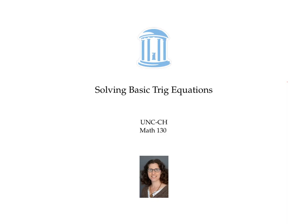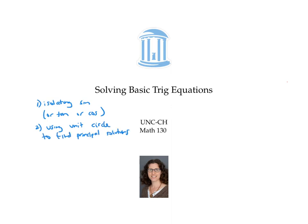In this video, we solved basic trig equations by first isolating sine, or tangent, or cosine, and then using the unit circle to find principal solutions. Principal solutions are just solutions between zero and two pi, and then adding multiples of two pi to these principal solutions to get all solutions. For tangent, we noticed that it was equivalent to just use one principal solution and add multiples of pi instead of two pi.